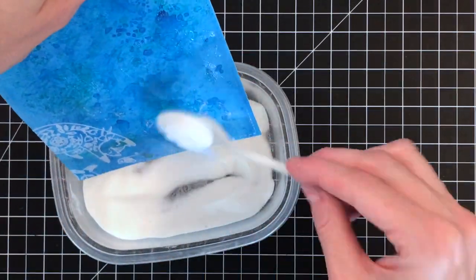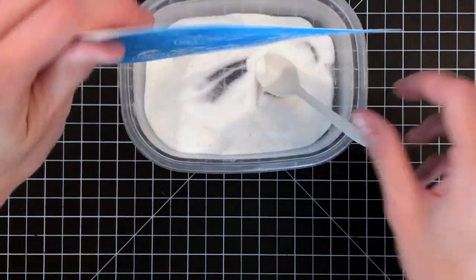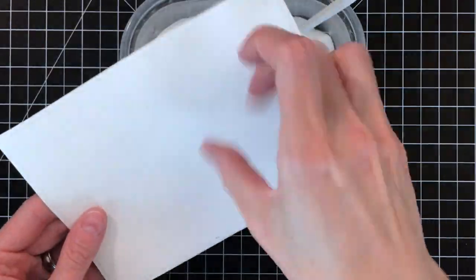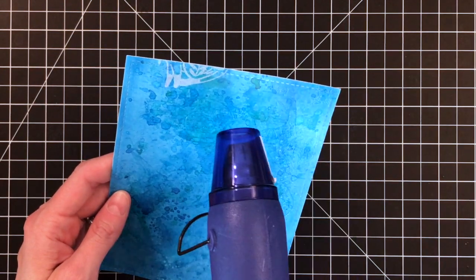And then the clear embossing powder, which will trap that watercolor paint and that distress ink. It will trap it underneath. Heat set it. And then this is where it gets fun as soon as this is done. All right. So I got the whole background done.